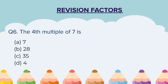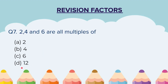Question 6: The fourth multiple of 7 is? 4 options are given — please select your answer carefully. Question 7: 2, 4, and 6 are all multiples of? 4 options are given — please select your answer carefully.